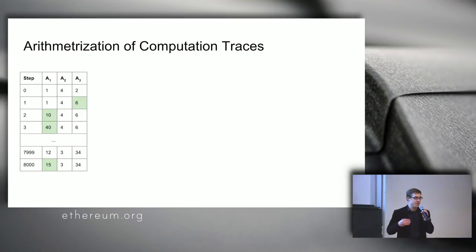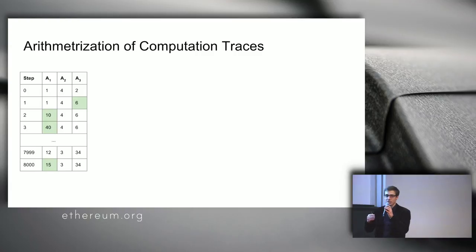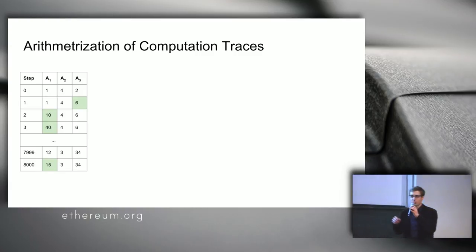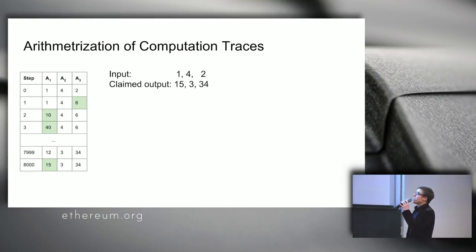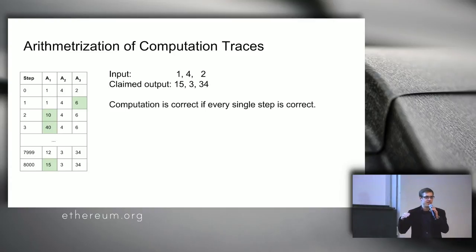The program is not a list of 8,000 instructions but is compressed with loops. At every step of the computation you know which operation to perform on which registers. We have an input of 1, 4, 2, and the prover claims the output is 15, 3, 34. The computation is correct if it is correct at every single step, and the idea is that verifying a single step is easy in comparison to running the whole thing.